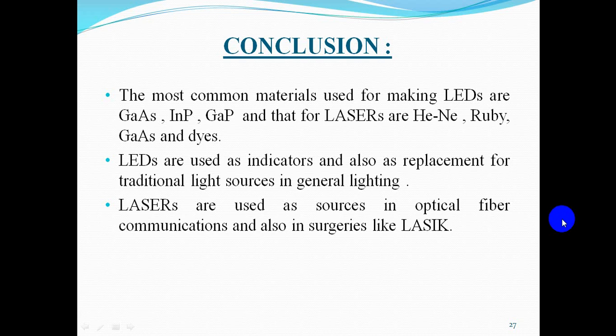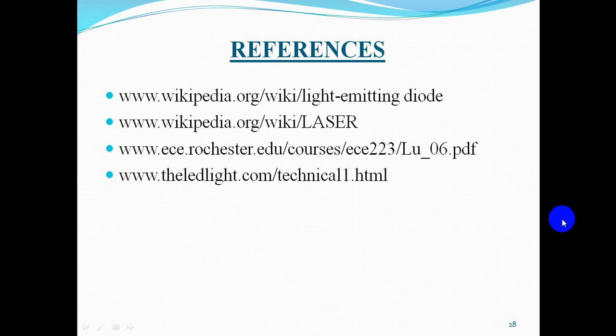In conclusion, the most common materials used for making LEDs are gallium arsenide, indium phosphide, and gallium phosphide, while those for lasers are helium-neon, ruby, gallium arsenide, and dyes. LEDs are used as indicators and as replacements for traditional light sources in general lighting — for example, CFL bulbs can be replaced by LED bulbs. Lasers are used as sources in optical fiber communications and in surgeries like LASIK. Thank you.